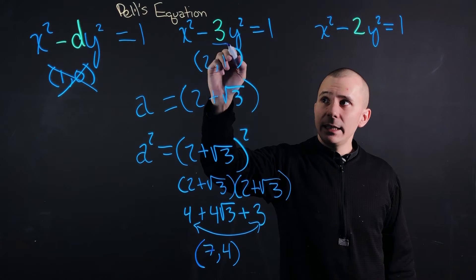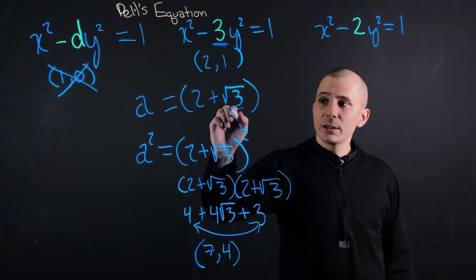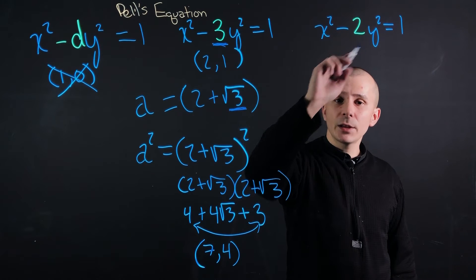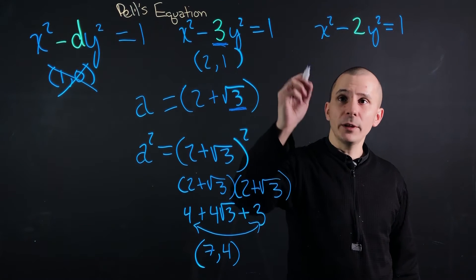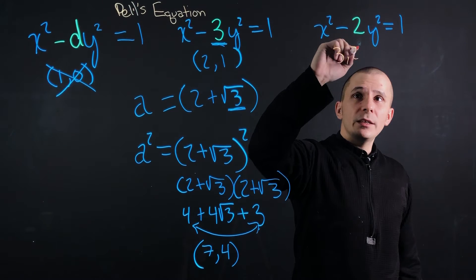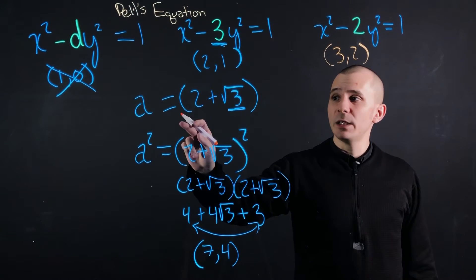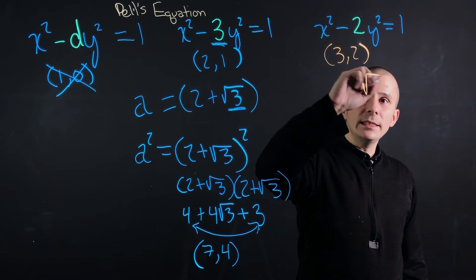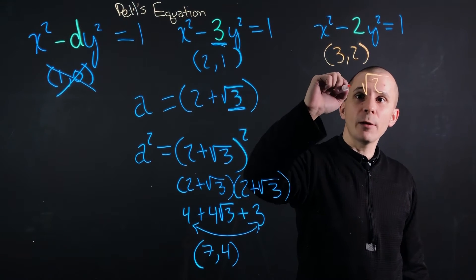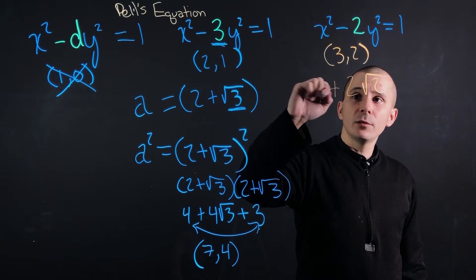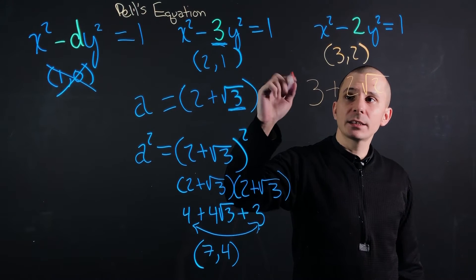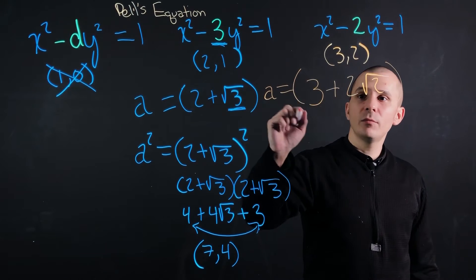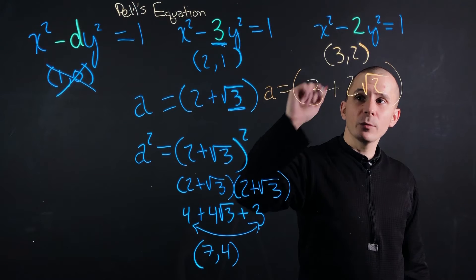Just remember that our d here is always going to end up in these square roots. So don't get confused if the 2 is the same as another number within the formula. 3 and 2 for this particular one. So what we can do is just like before, we're going to take the d, the 2, we're going to take our y, a 2, and we're going to take our x, a 3. And we're going to say that a = 3 + 2√2.